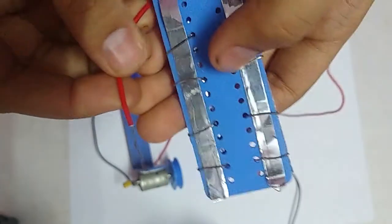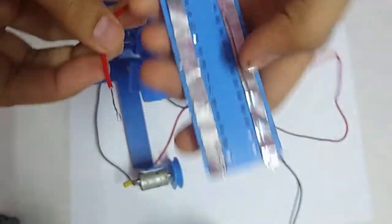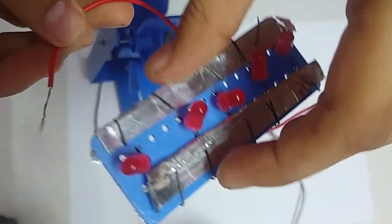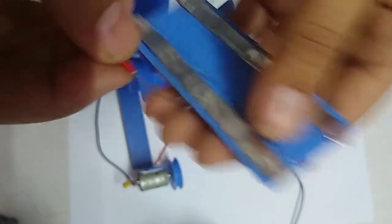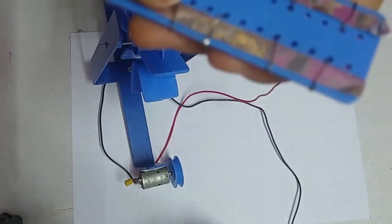Now attach the wire of the motor to the LED bulb, negative and positive terminal wires at the start or at the end.